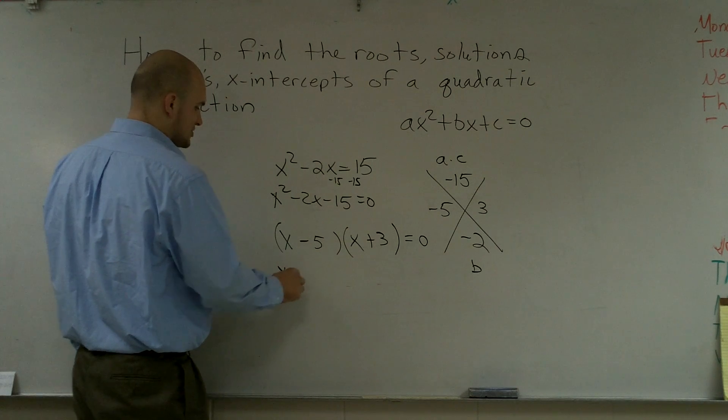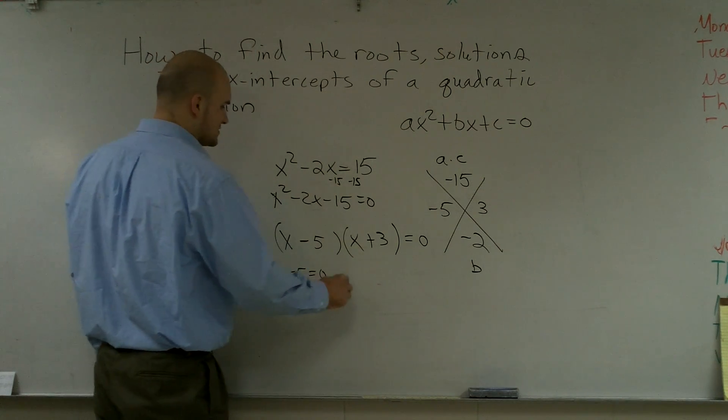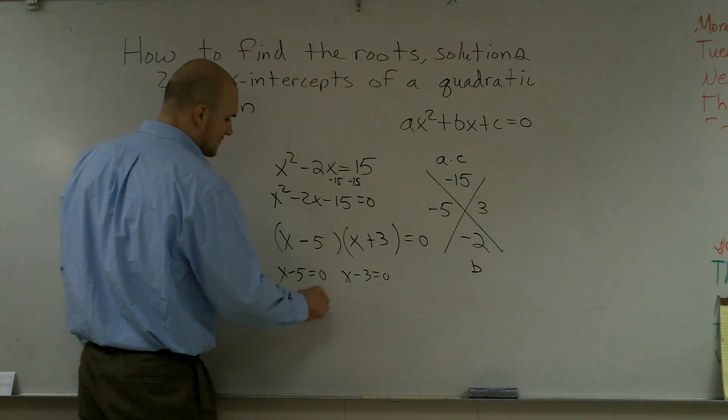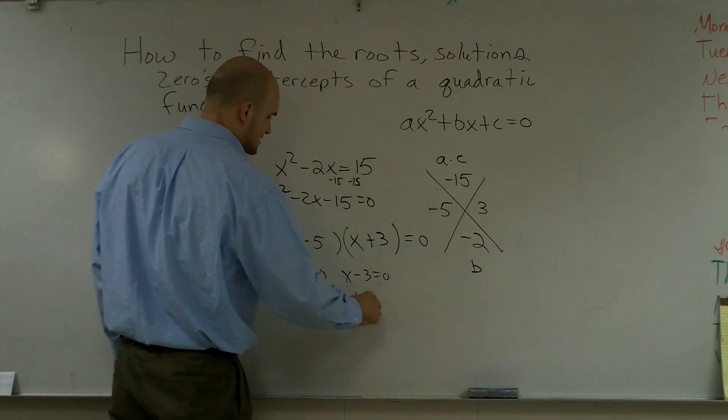Now, you put it in the zero product property, x minus 5 equals 0, and x minus 3 equals 0. Add 5, so you get x equals 5. Add 3 on both sides, x equals 3.